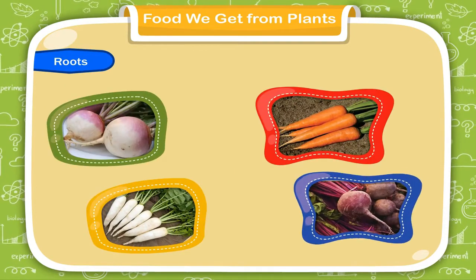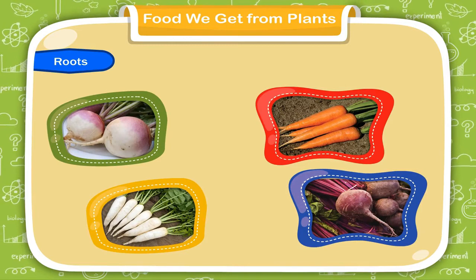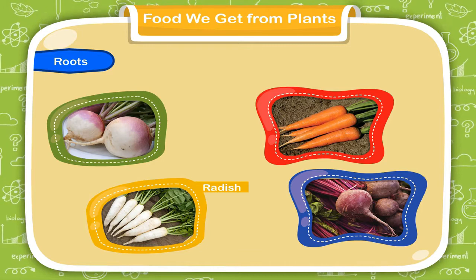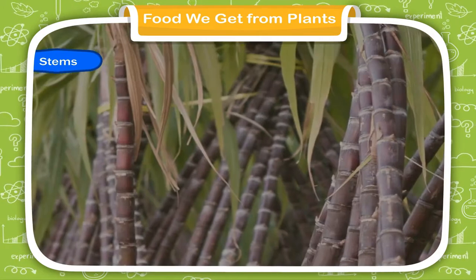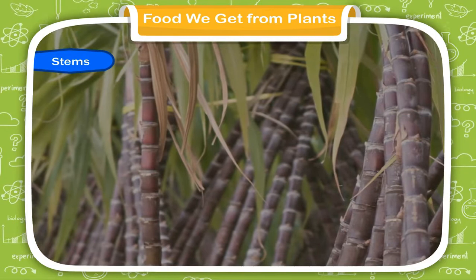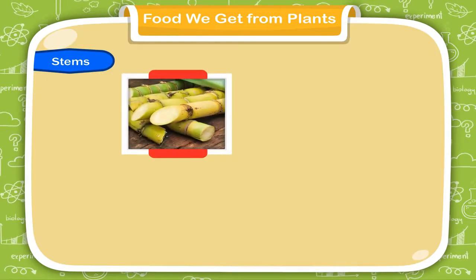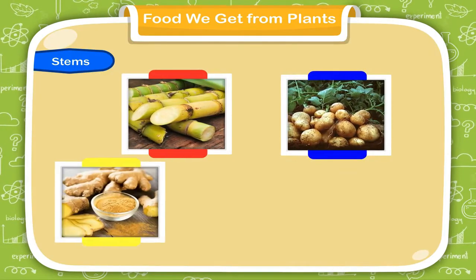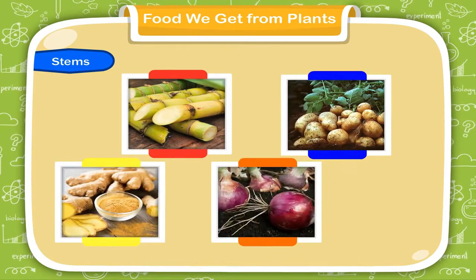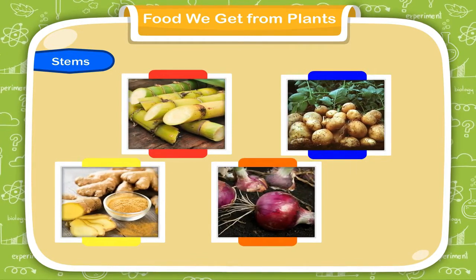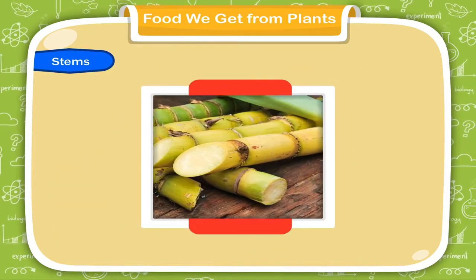Roots. We eat the roots of some plants such as turnip, carrot, radish, beetroot, etc. Stems. We eat the stems of plants such as sugarcane, potato, ginger, onion, etc. The sugar that we use is obtained from sugarcane.